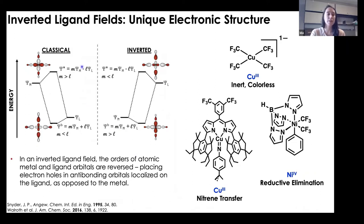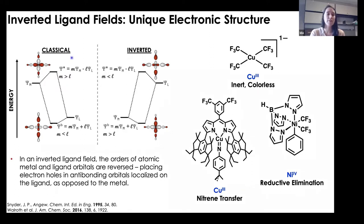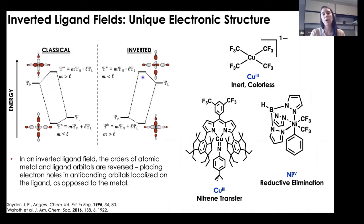If you're not familiar with an inverted ligand field: in a classic Werner ligand field diagram, ligand atomic orbitals are placed at lower energy and metal atomic orbitals at higher energy. When they mix, we're left with molecular orbitals that are largely metal in character. In ligand field inversion, we simply invert those orderings, placing the metal atomic orbitals at lower energy and ligand atomic orbitals at higher energy. When they mix, we're left with molecular orbitals that are largely ligand in character — so oxidizing or reducing the species really adds and removes electrons from the ligand as opposed to the metal.